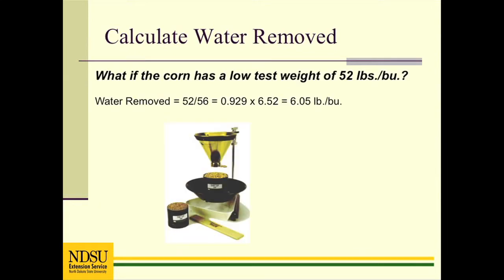Since the weight of water removed is based on a 56-pound bushel, if the corn is lighter or heavier, the weight of water removed will be affected. The adjustment is proportional to the test weight, so multiplying the weight of water removed by the ratio of the test weights provides the adjusted weight of water. For corn with a test weight of 52 pounds per bushel, the weight of water removed is 6.05 pounds per bushel rather than 6.52 pounds.